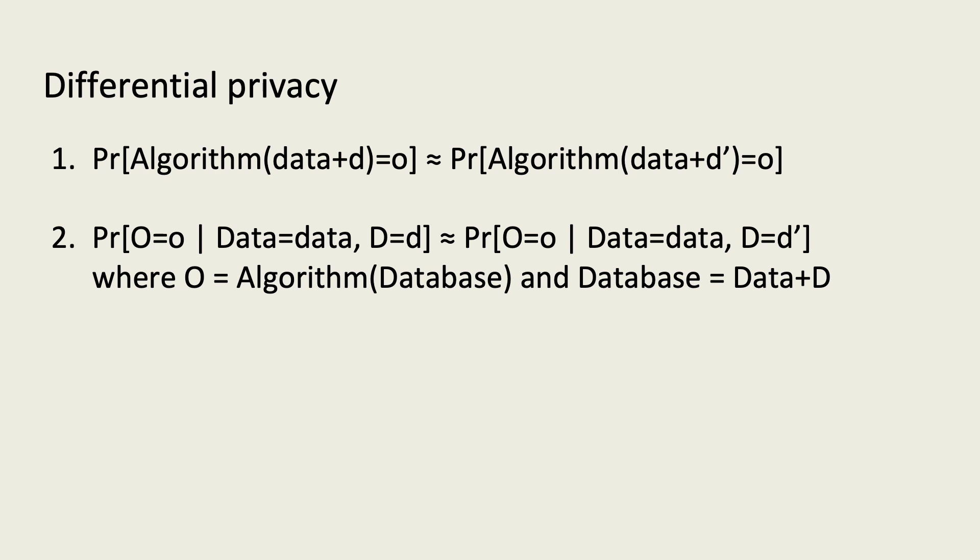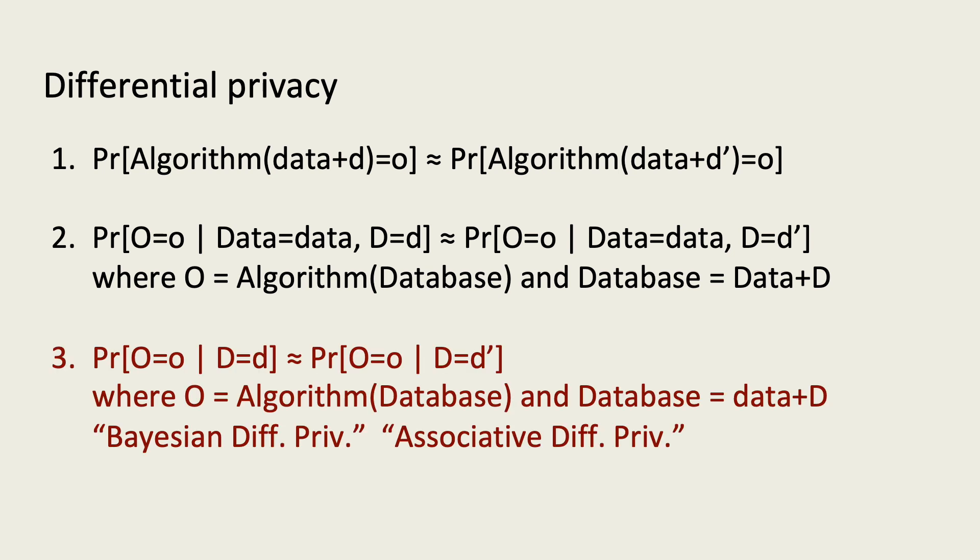It's natural to try and simplify this comparison by jettisoning all the data points other than the one that varies in the comparison of probabilities. This would allow us to focus on the association between the changed data point and the output. This modified form of differential privacy has been called Bayesian or associative differential privacy and has been promoted by several papers as what differential privacy is supposed to imply.